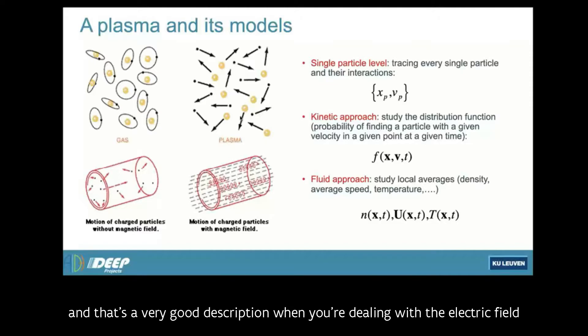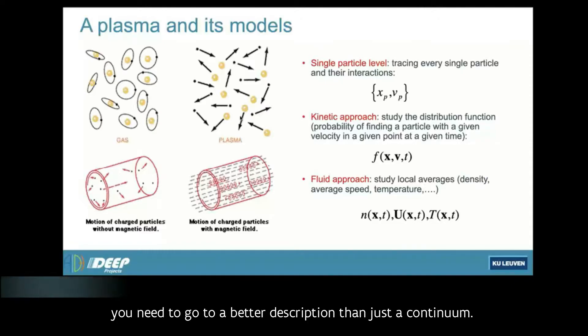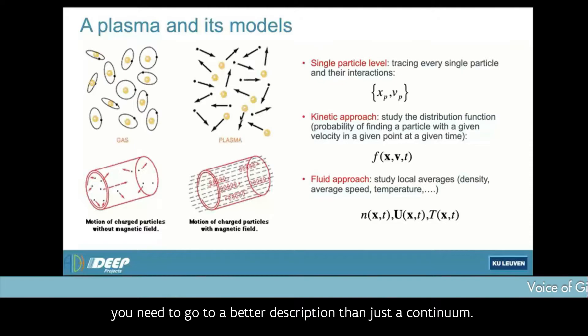The description of this system can be done at different levels. You can do this at a continuum level. You consider the solar wind as if it was a continuum. That's a very good description when you're dealing with the electric field and magnetic field, with the disruptions that happen at the magnetic level. But when you're dealing with high energy particles, that's not a good description. If you want to be accurate on predicting what kind of radioactivity levels will be reaching the astronauts, for example, you need to go to a better description than just a continuum.